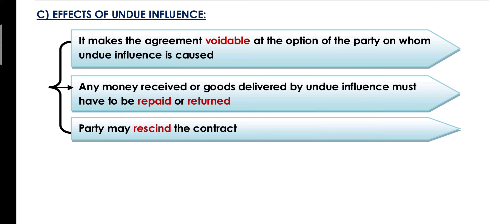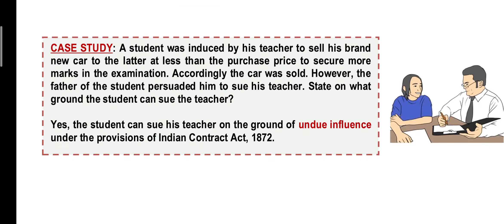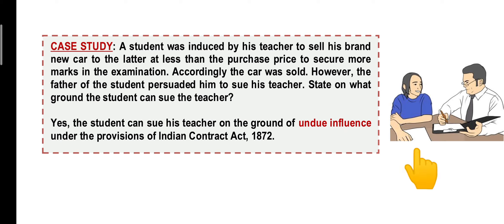Now let us understand the effects of an agreement entered under undue influence. One: undue influence exercise karke kiya gaya koi bhi agreement avoidable ban jayega — avoidable at the option of the party on whom undue influence is exercised. Two: agar undue influence exercise karke koi money ya property liya hai toh woh money repay karni hogi aur woh property return karni padegi. Three: jis person ke saath undue influence hua hai woh person contract ko rescind, yaane cancel bhi kar sakta hai.